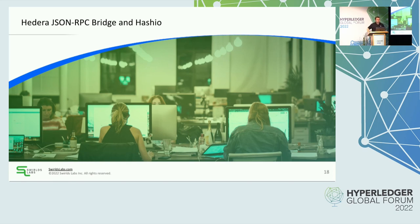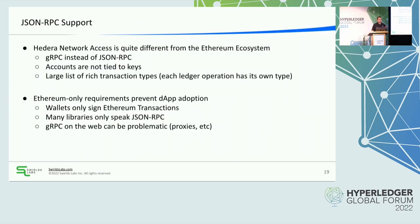The last thing I want to talk about is the Hedera JSON-RPC bridge and Hashio project. Hashio is the branded hosted version, but it's actually a JSON-RPC bridge solving what I call the last mile problem of getting people to use Hedera from Ethereum. Developer tools depend on the Ethereum way of accessing the network — a JSON-RPC interface, specific JSON-RPC call responses, and deep assumptions about the Ethereum network, such as one transaction type, RLP encoding, ECDSA key signing, and the signing key matching the account. These assumptions run counter to some things we've done inside Hedera.